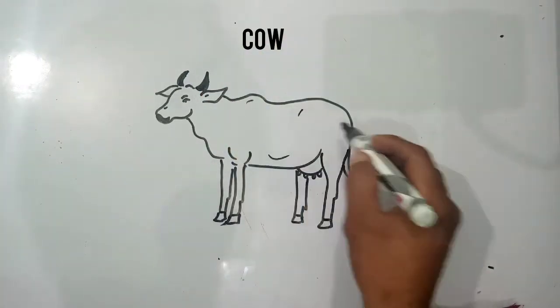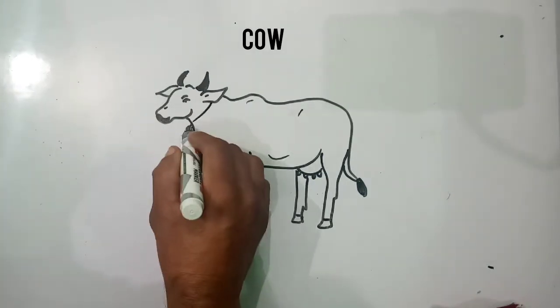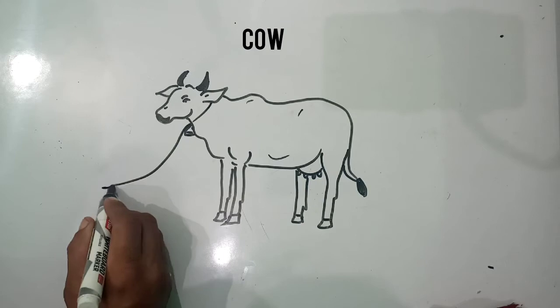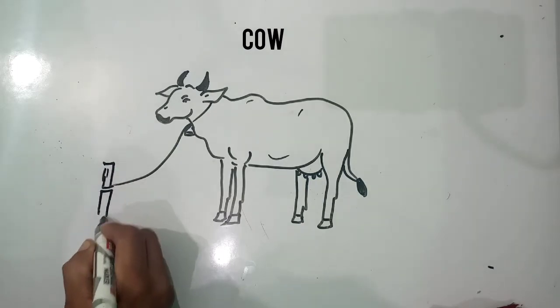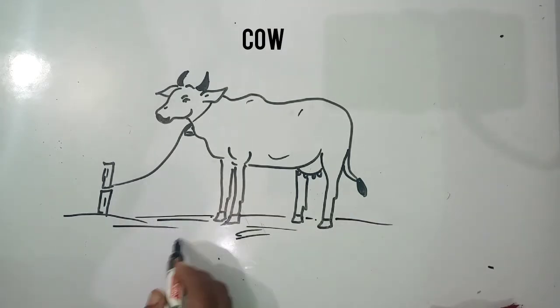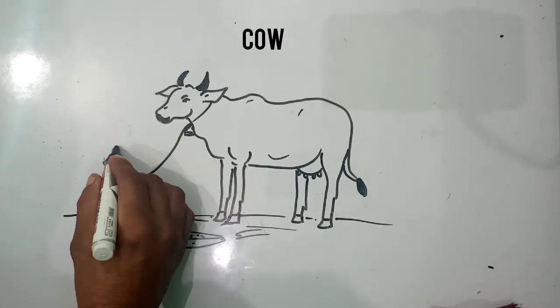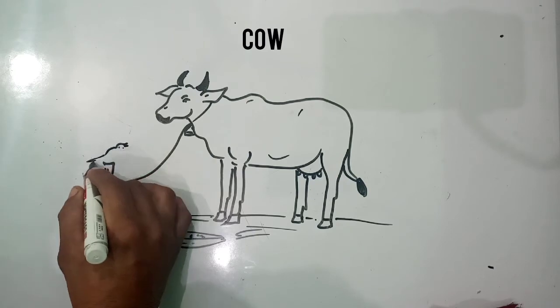Here is the cowbell and this is the rope. This is a little bird I am drawing.